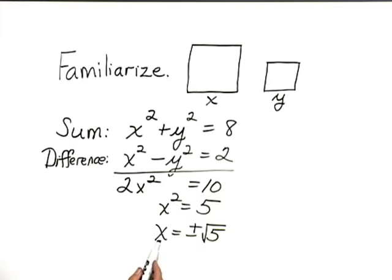Notice that there are two values for x, but one of them is negative, so we'll just use the x value, positive square root of 5.